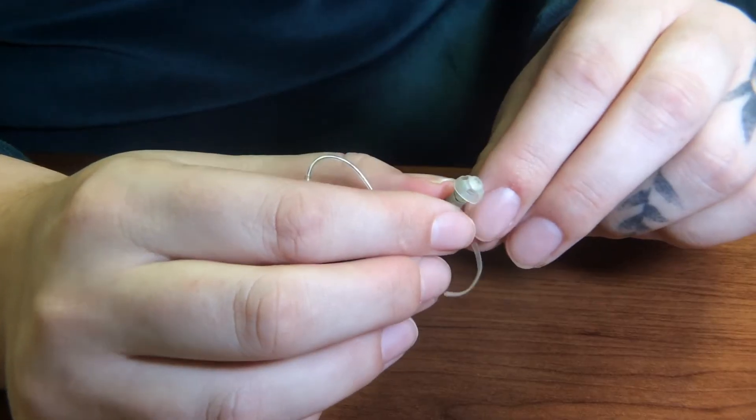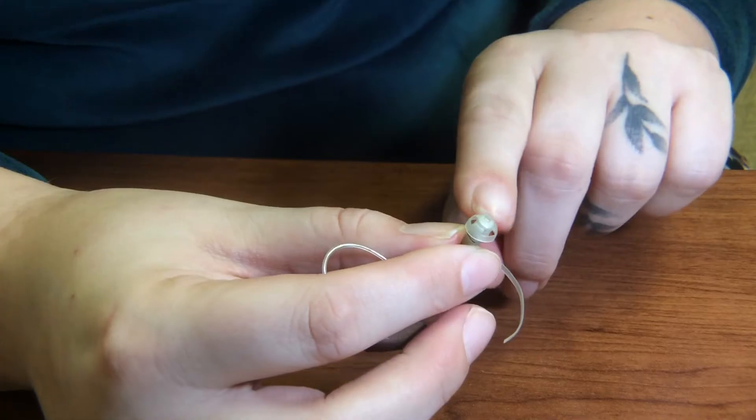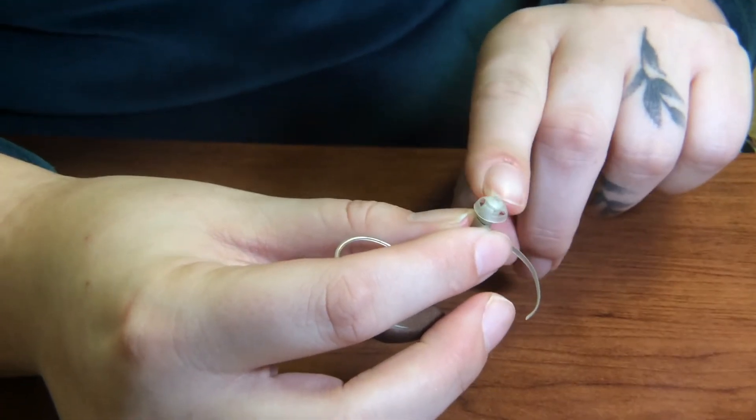To perform a visual check on this hearing aid, we need to take a look at the dome and make sure that there's no debris inside any of the openings.